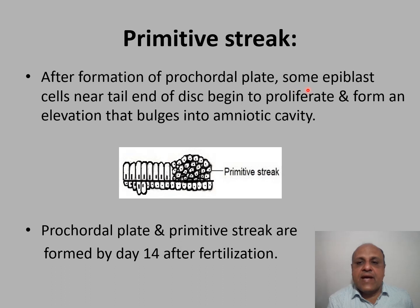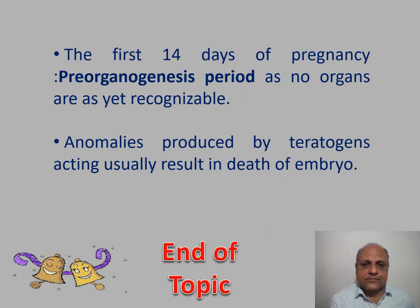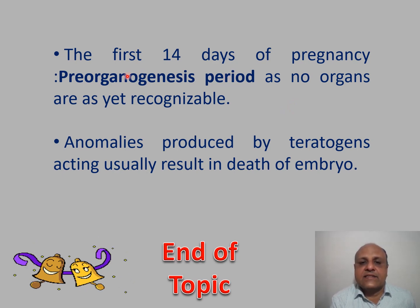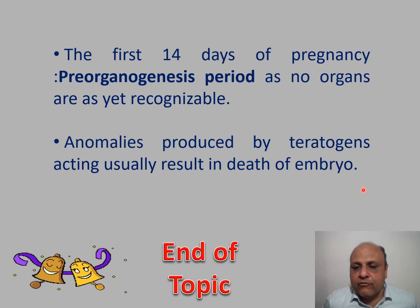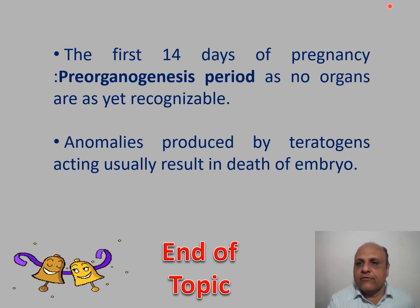Soon after formation of the prochordal plate, some epiblast cells near the tail end begin to proliferate, forming an elevation that bulges into the amniotic cavity — this is called the primitive streak. Both the prochordal plate and primitive streak are found by day 14 after fertilization. This concludes the pre-organogenesis period, during which no organs are yet recognizable. Teratogens acting during this period usually result in death of the embryo. Next time we will cover gastrulation and formation of the three germ layers.